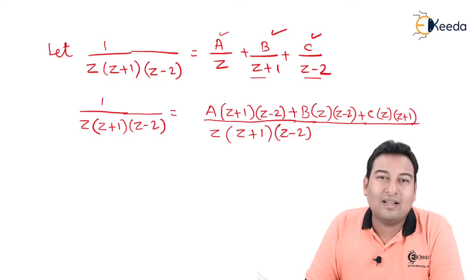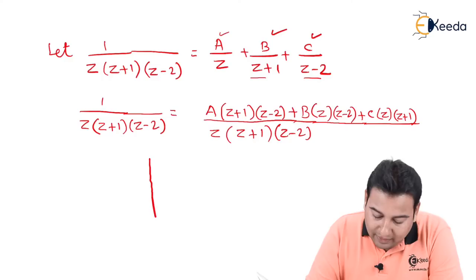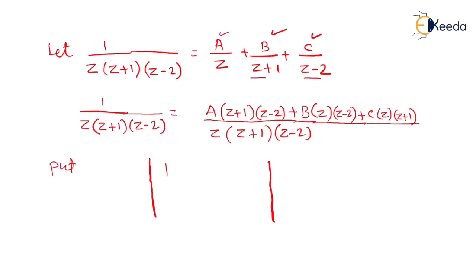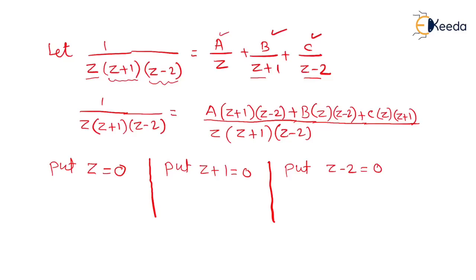Our main aim is to find A, B, and C. We'll use the substitution method — since we need three values, there will be three substitutions. The substitutions depend on the factors: z=0 from the factor z, z=-1 from z+1 equal to zero, and z=2 from z-2 equal to zero.